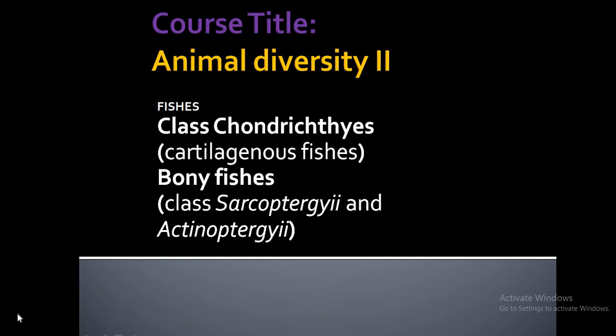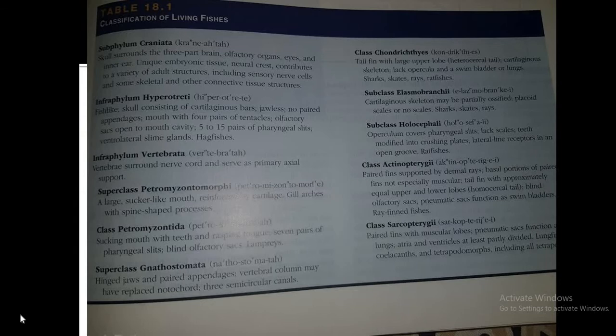Today our topic of discussion is the classes of fishes, including class Chondrichthyes which are the cartilaginous fishes, and bony fishes which further includes two classes: Sarcopterygii and Actinopterygii. These are also called Gnathostomes, while Chondrichthyes are Agnathostomes which don't have a bony skeleton in their bodies. Before starting with class Chondrichthyes, we will first look again at the classification of living fishes.